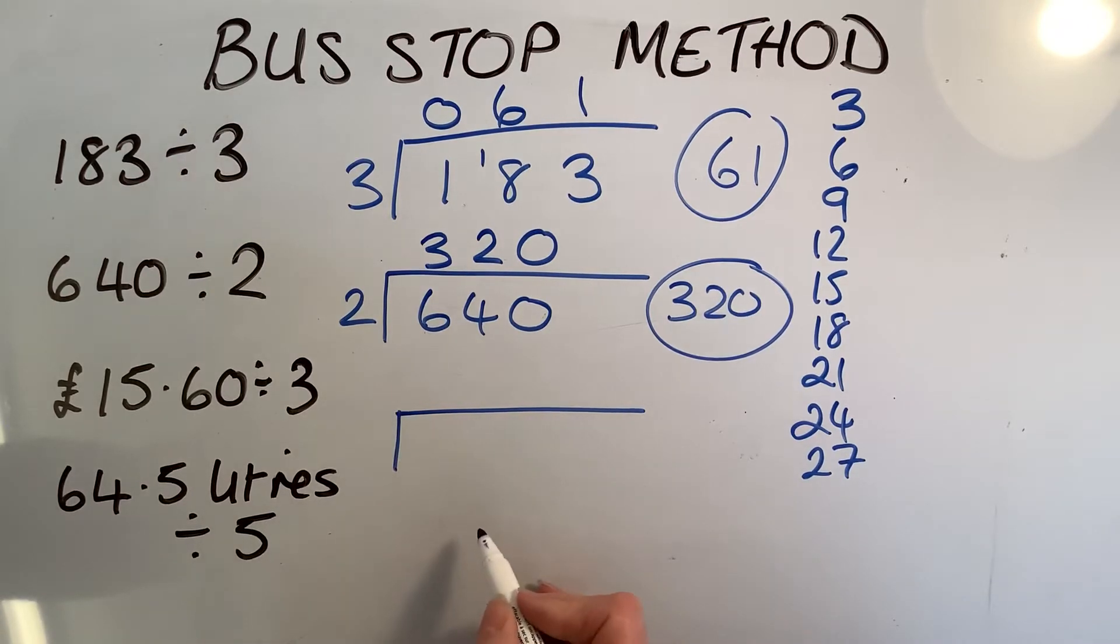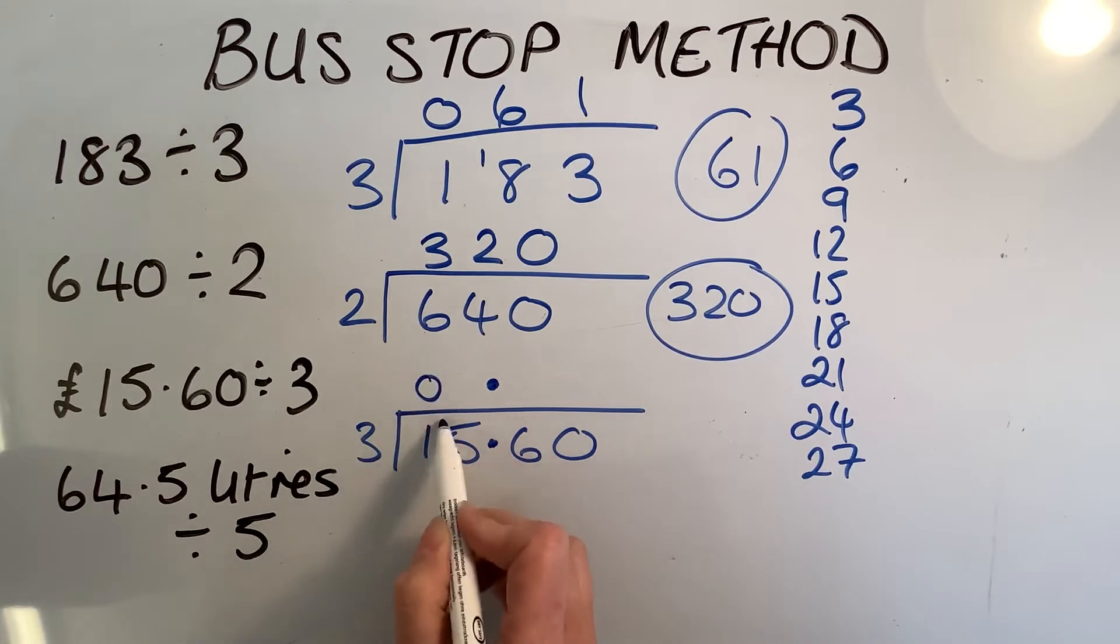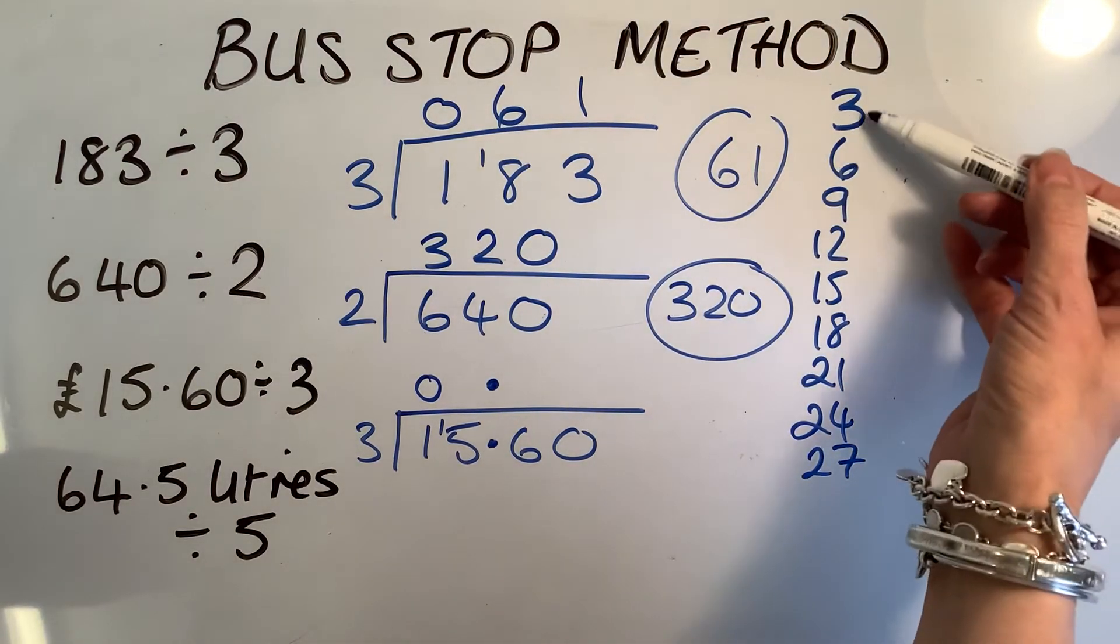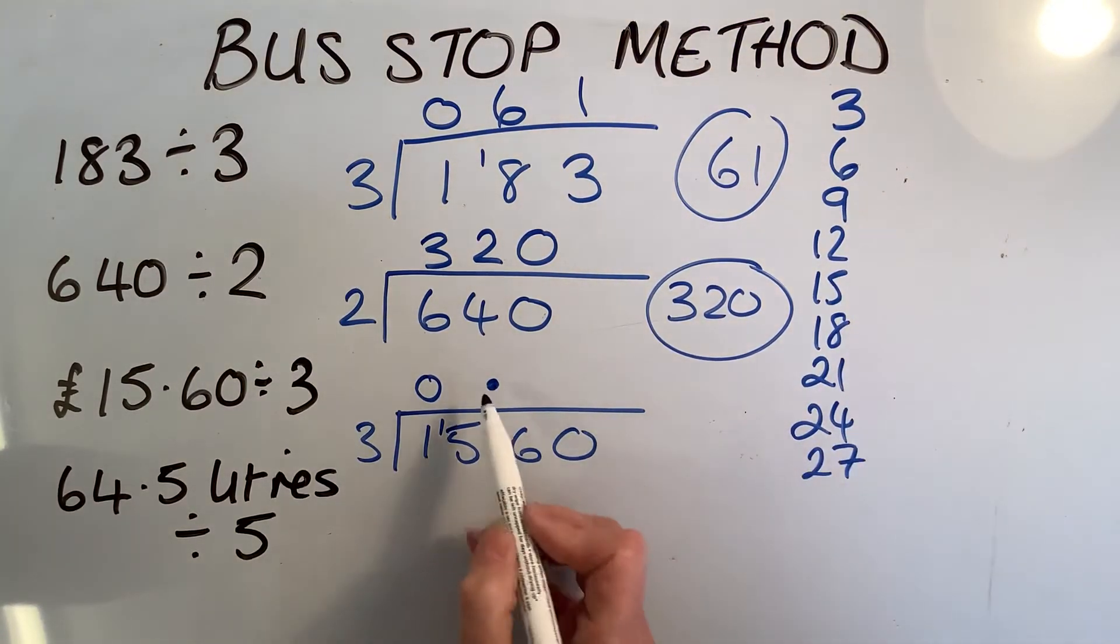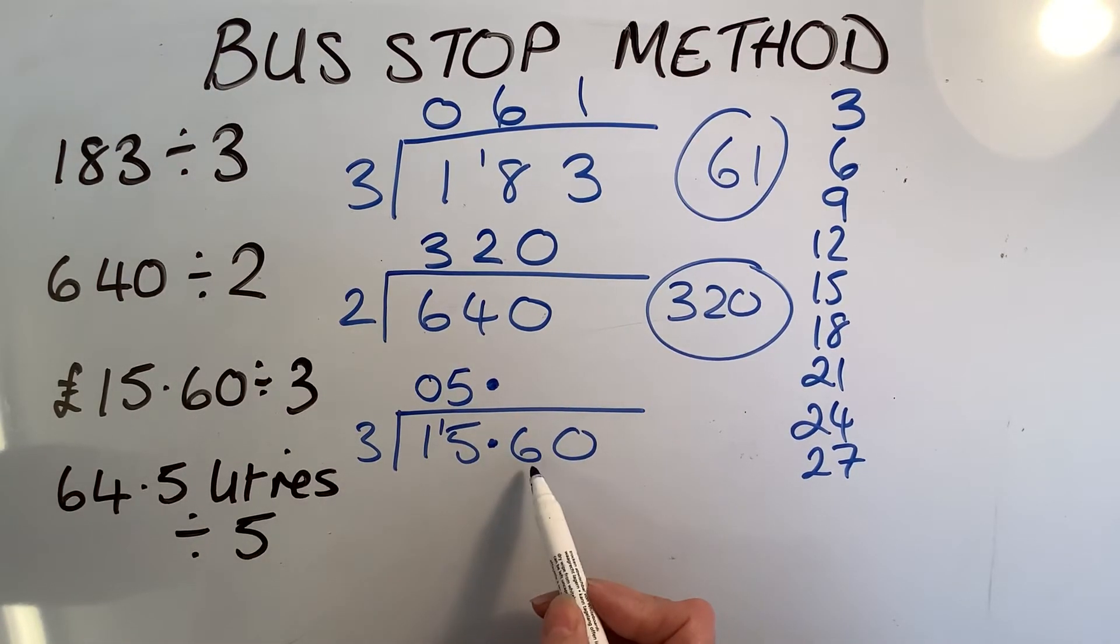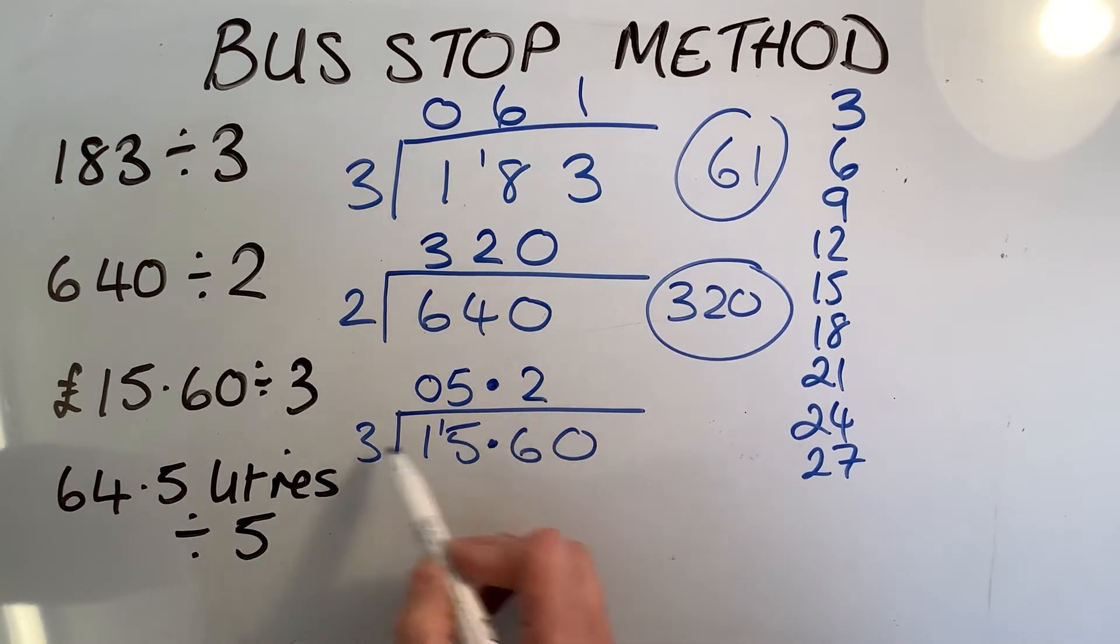Looks a little bit more difficult, but it's actually not, because I've got £15.60 divided by 3. It's got a decimal point in the question, so I'm going to put a decimal point at the top. How many 3s are in 1? That's less, so I'm going to put 0 there and carry my 1 over, so I've got 15. How many 3s are in 15? 1, 2, 3, 4, 5. Put a 5 at the top. No remainders, nothing to carry over. How many 3s are in 6? That's 2. How many 3s are in 0? 0.